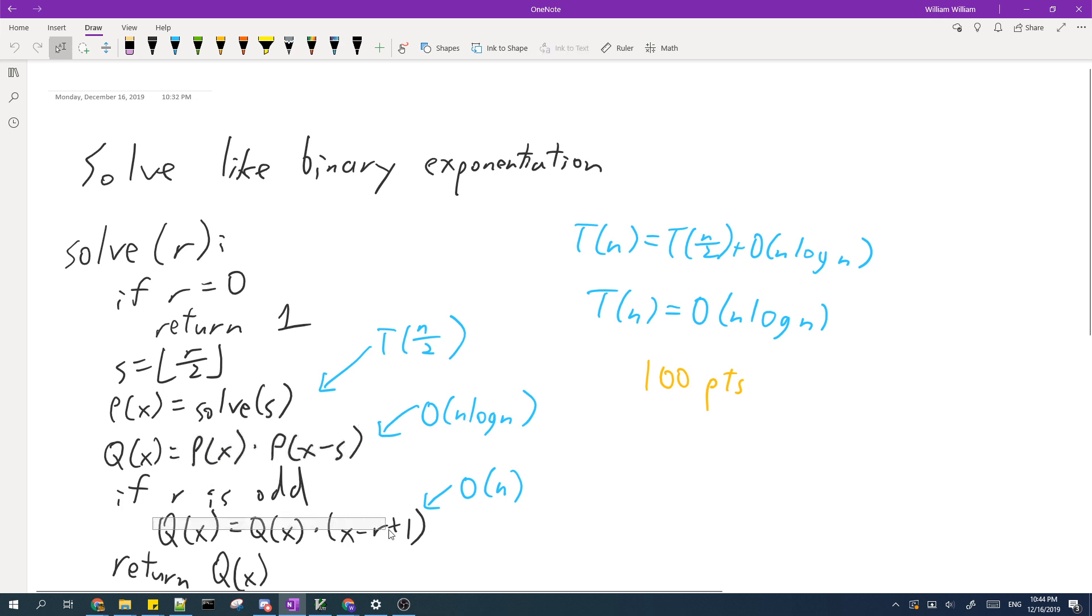The last part can be done in linear time. So if we add these all together, we get this equation over here. And when we solve it, we find that this algorithm runs in n log n time. And this is enough to get 100 points.